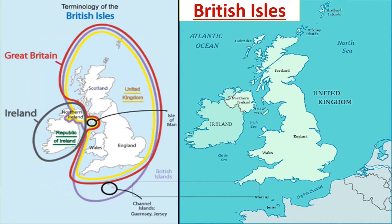The United Kingdom, also referred to as UK, comprises two main islands: Great Britain and Northern Ireland. Great Britain is made up of Scotland, England, and Wales. As you can see in figure one, there are two divisions of the island of Ireland — the southern part is called the Republic of Ireland, and the northern part is called Northern Ireland and is part of the UK.